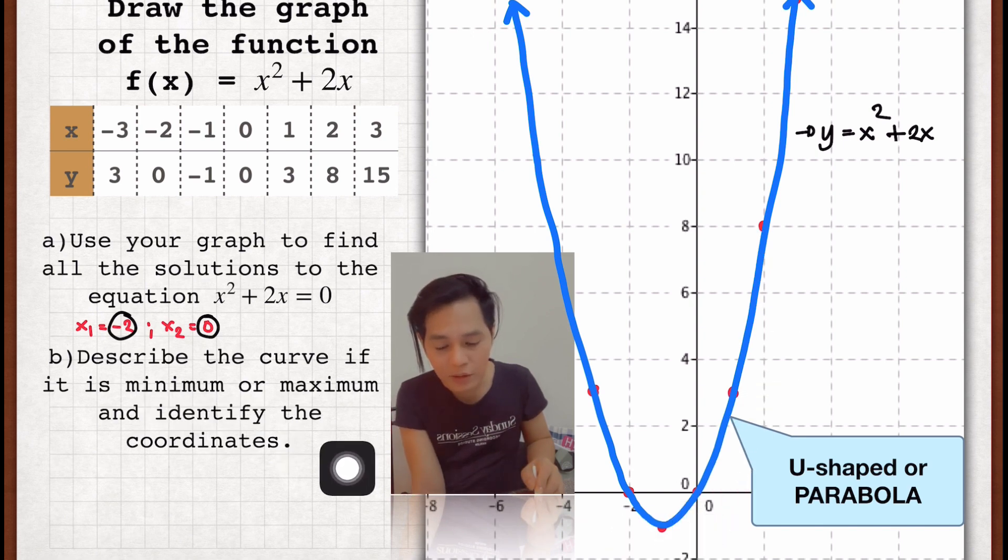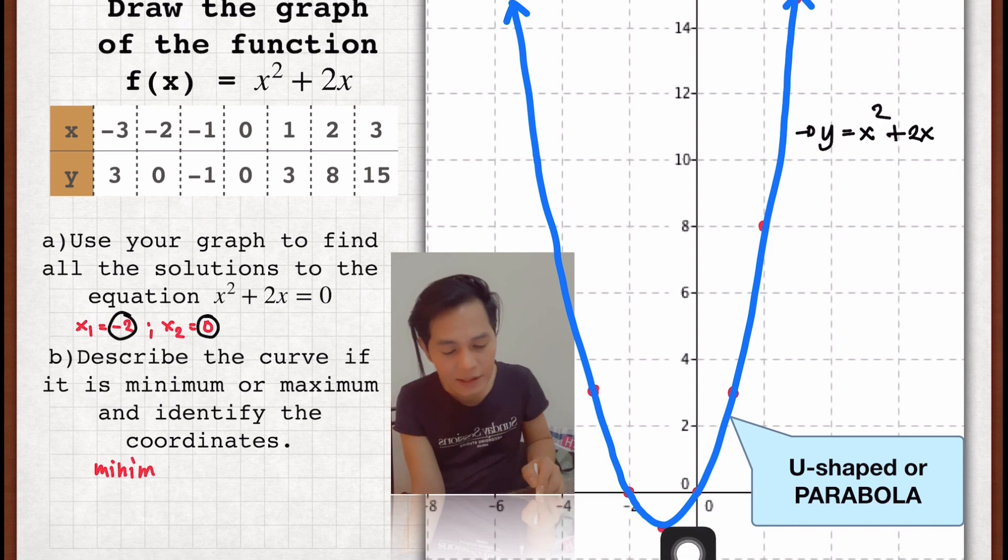Where? At what point? So look at this. Down below there, this is negative 1 and negative 1. So, minimum at negative 1, negative 1.